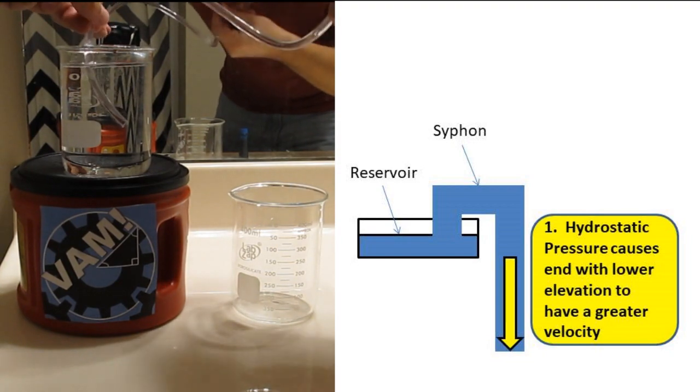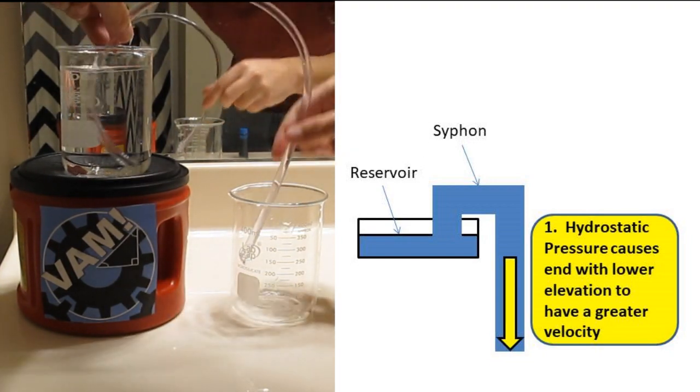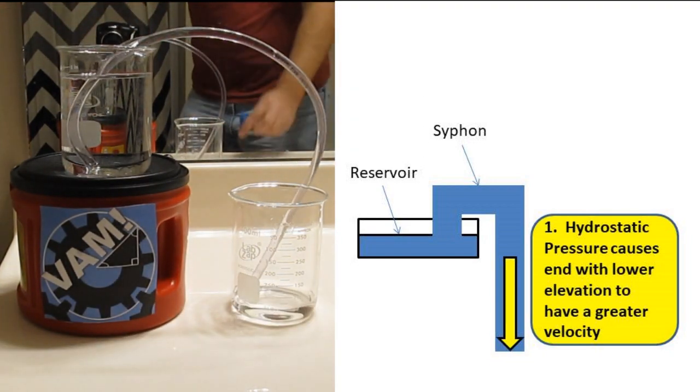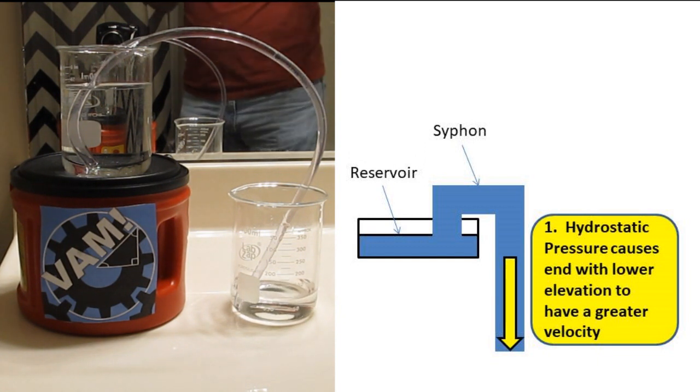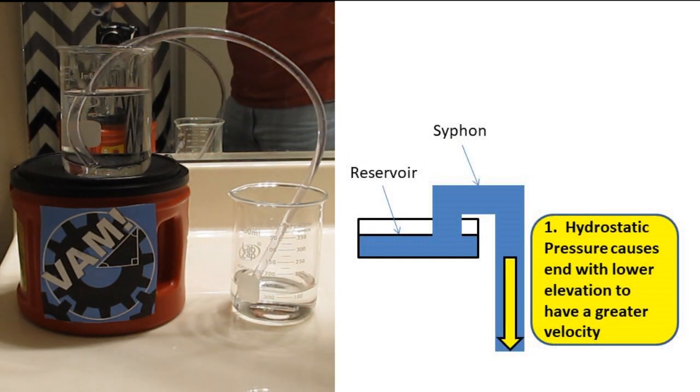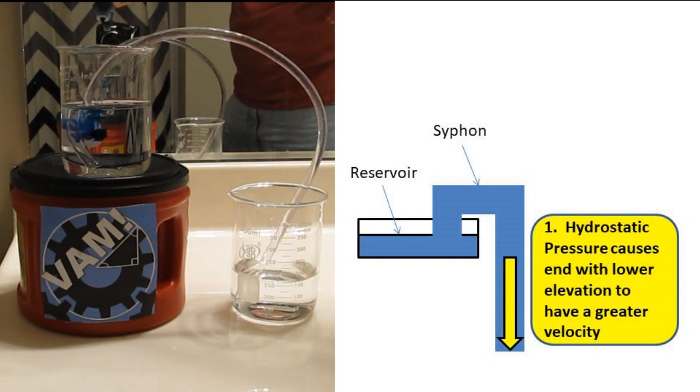Siphons consist of a hose or pipe that is filled with water with one end in a liquid reservoir and the other end lower than the water line in the reservoir. The way the siphon works is the hydrostatic pressure causes the end with lower elevation to have a greater velocity.